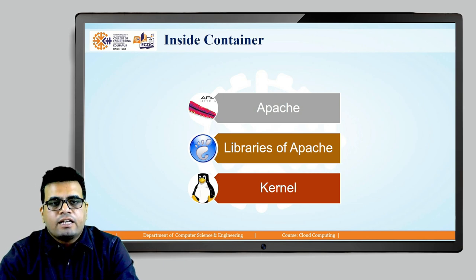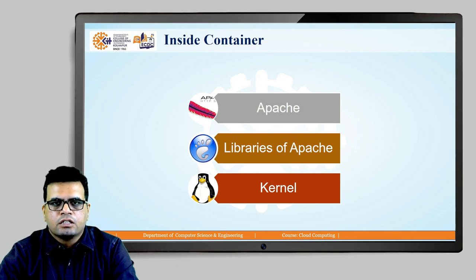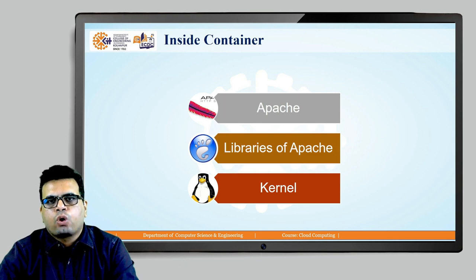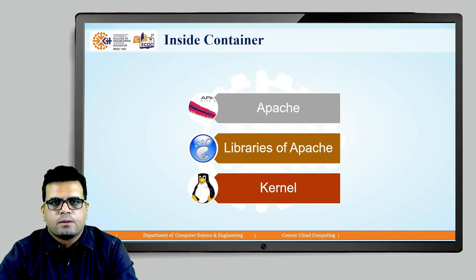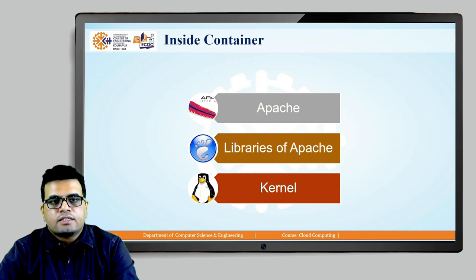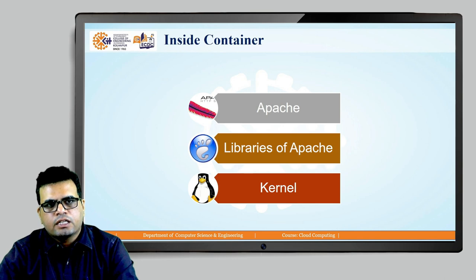These are the layers inside the container. The bottom layer is the kernel. On top of the kernel, there is a layer called libraries, and the top layer is the actual application or package that the user is going to get as a service. This is a layered image. When we launch this image, we create a container — an executing image is called a container.